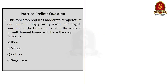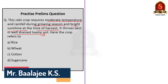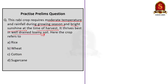The third question gives a description of a crop and asks us to identify it. This rabi crop requires moderate temperature and rainfall during the growing season and bright sunshine at the time of harvest, and it thrives best in well-drained loamy soil. From our discussion, the crop being described is clearly wheat. The correct answer is option B, wheat.